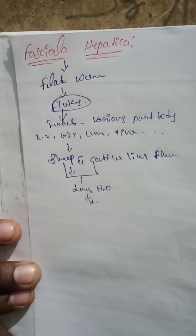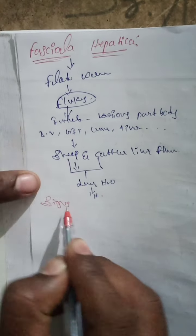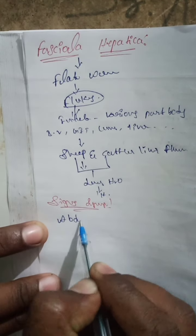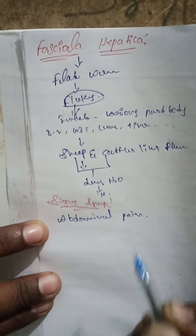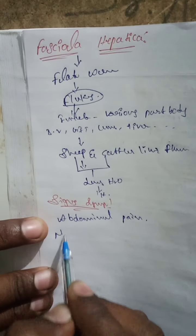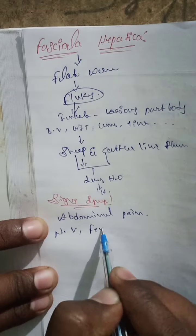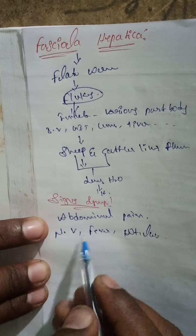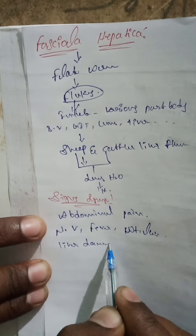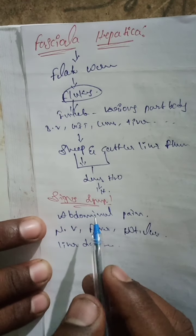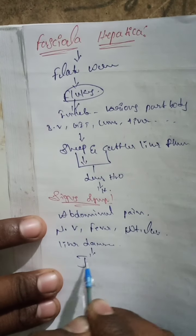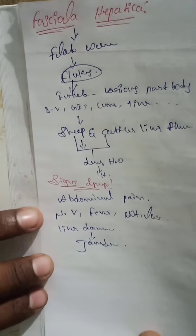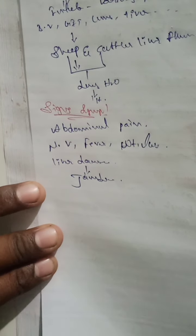What are the signs and symptoms? The first sign is abdominal pain. Other symptoms include nausea, vomiting, fever, and weight loss. Liver damage also occurs. Sometimes jaundice occurs as well. These are the signs and symptoms identified in the body due to Fasciola hepatica.